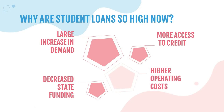In summation, the big reasons why student loans cost so much now: there's been a large increase in demand largely spurred by the government, a decrease in state funding, higher operating costs that colleges have passed on to borrowers, and more access to credit where the government keeps producing programs that cover the cost of college — while colleges aren't responsible for lowering their costs at all.